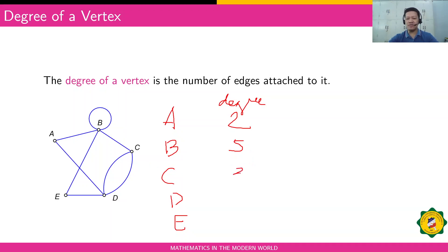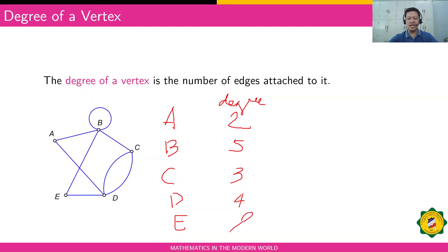For vertex D, we have one, two, three, four edges connected to it, therefore the degree of vertex D is four. For vertex E, there are two edges connected to it, so the degree is two.